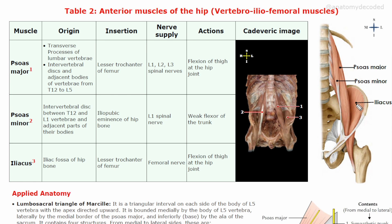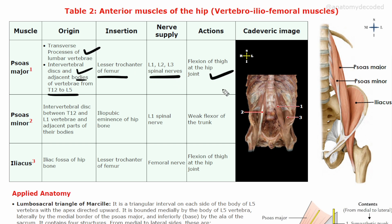Psoas major: origin is the transverse processes of lumbar vertebrae, the lumbar vertebral bodies, and the intervertebral discs from T12 to L5. Insertion is on the lesser trochanter of the femur. Nerve supply is L1, L2, L3 spinal nerves. Action is flexion of the thigh at the hip joint.